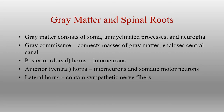Gray matter is gray because it has no myelinated fibers — it has cell bodies, unmyelinated processes, and a large number of neuroglial cells. Gray matter and white matter have connections between the two halves of the brain or spinal cord called commissures. In the spinal cord, the gray commissure connects the two halves of the H portion. We also have an anterior horn and a posterior horn, divided into different types of information: the anterior horn is motor and the posterior horn is sensory.